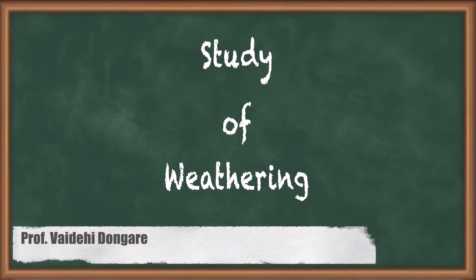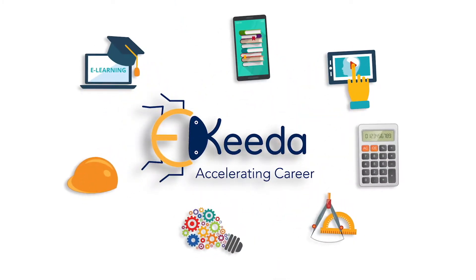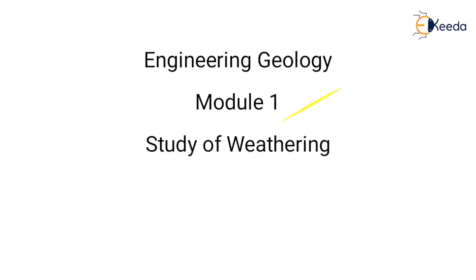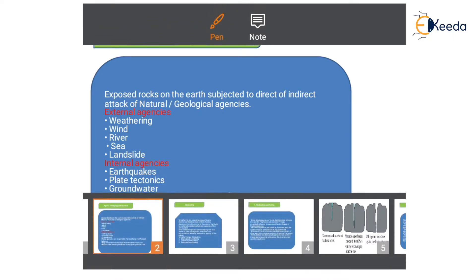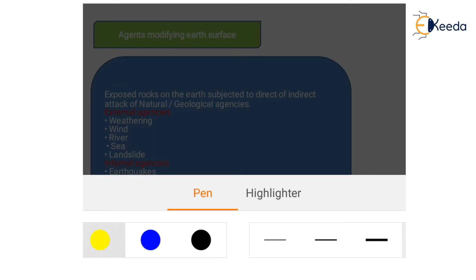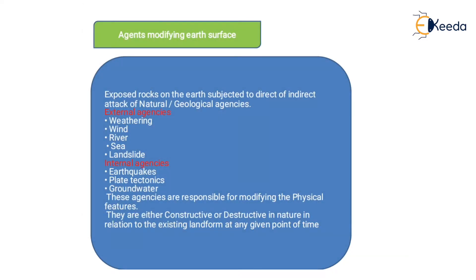Today I'm going to be explaining types of weathering. The first point is agents of modifying Earth's surface. Earth consists of different structures like hills, mountains, and plateaus, which get modified due to the impact of different agents. These agents are either external or internal. External agencies are weathering, wind, river, sea, and landslide, and internal agencies are earthquake, plate tectonics, and groundwater.